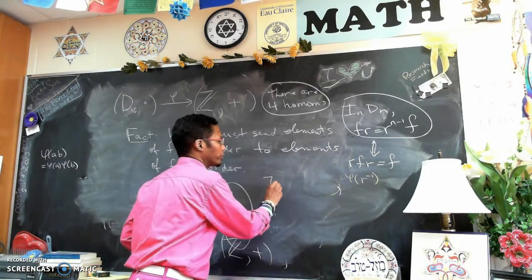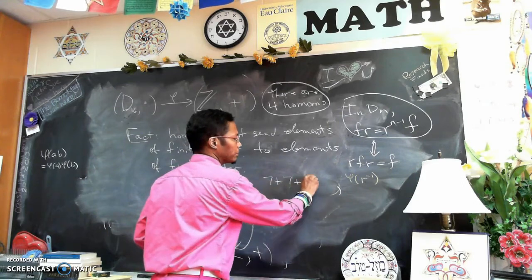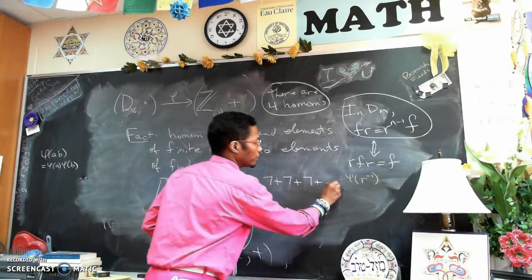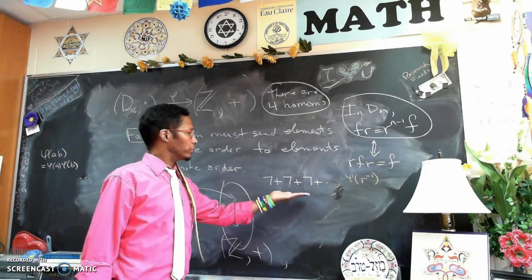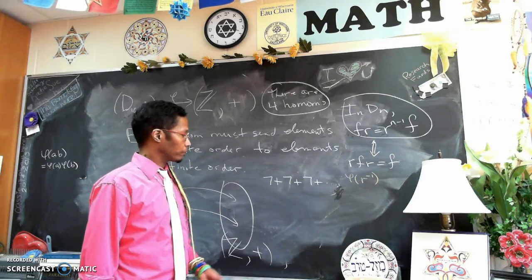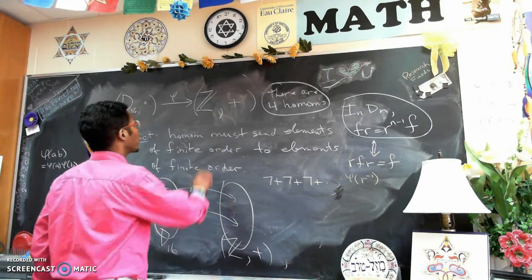All of the elements in here have finite order in D16. And the integers just under plus, there's not a lot of elements of finite order. So there's not a lot of choices of where to send R and where to send F. It's up to you to think about how many elements in here have finite order. For example, the order of seven: can I add seven to itself, how many times before I get the identity in here? The identity in here is zero. This is never going to equal zero. Seven has infinite order.